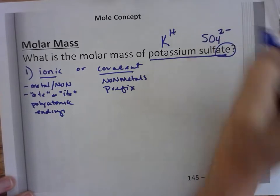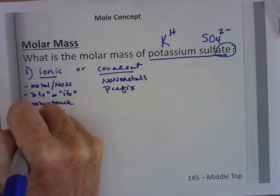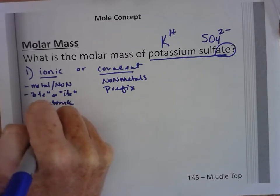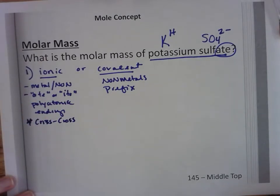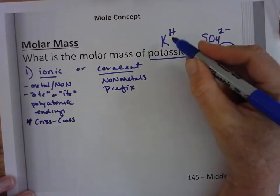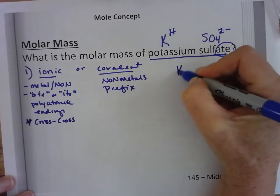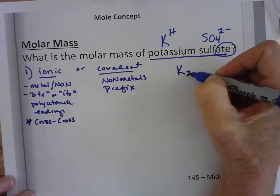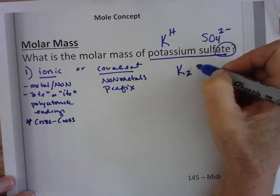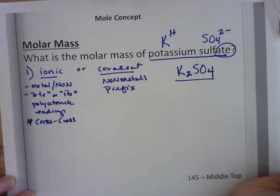Collecting the charges is not enough. If it's ionic, we have to crisscross, which means the digit of the charge becomes the subscript for the other ion. So the one goes for the SO₄ and the two goes for the K. So there's our formula: K₂SO₄.